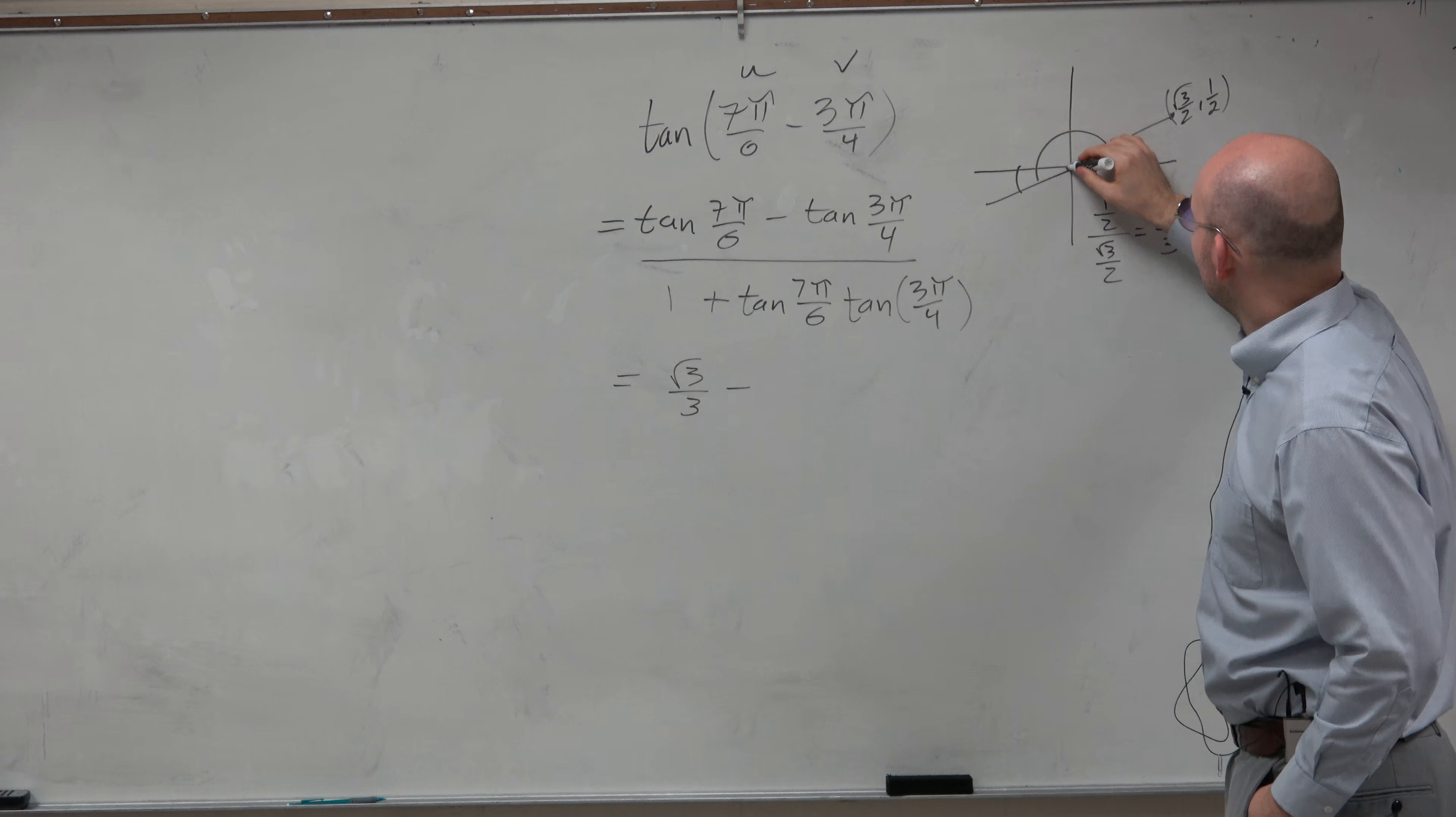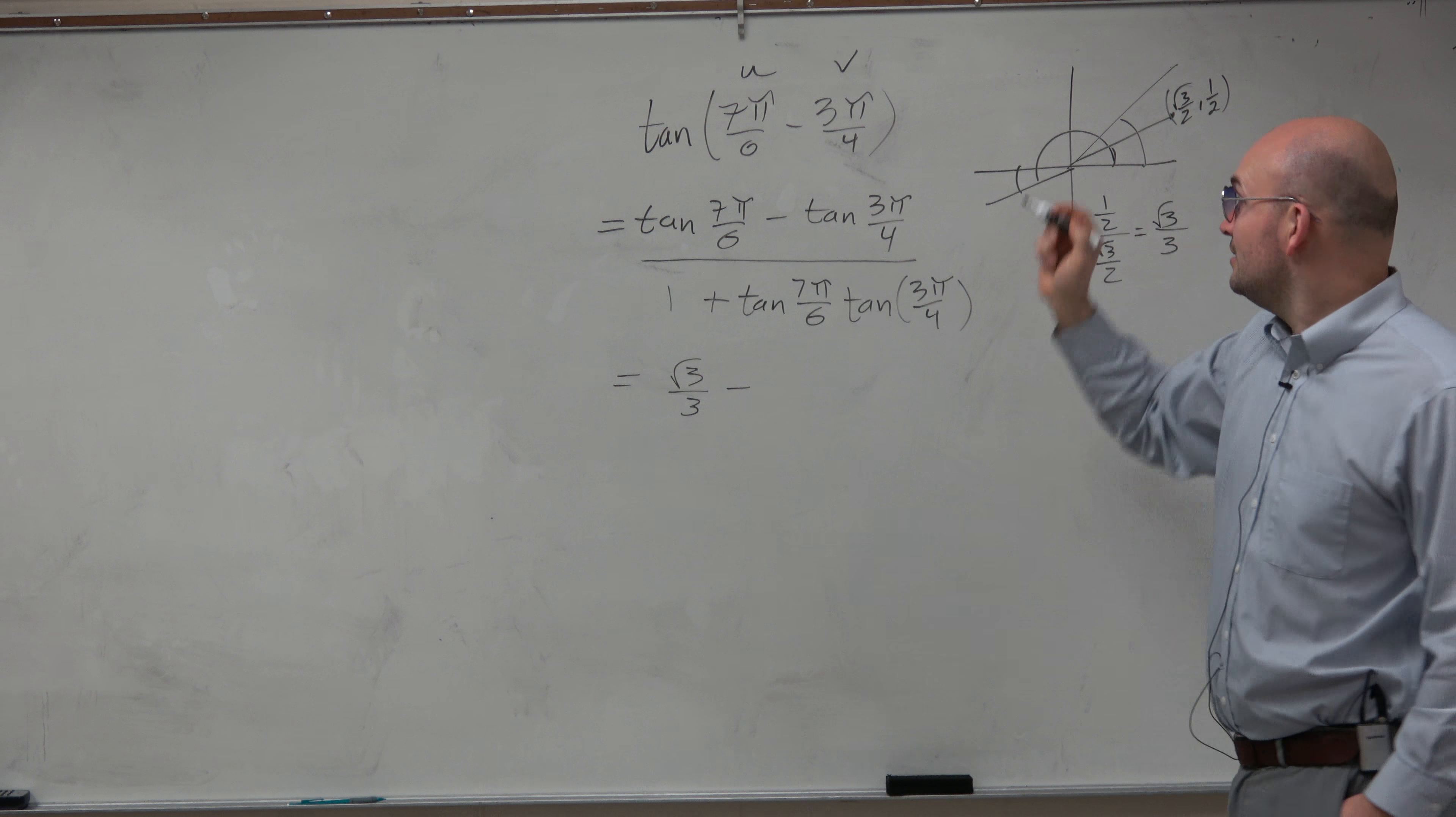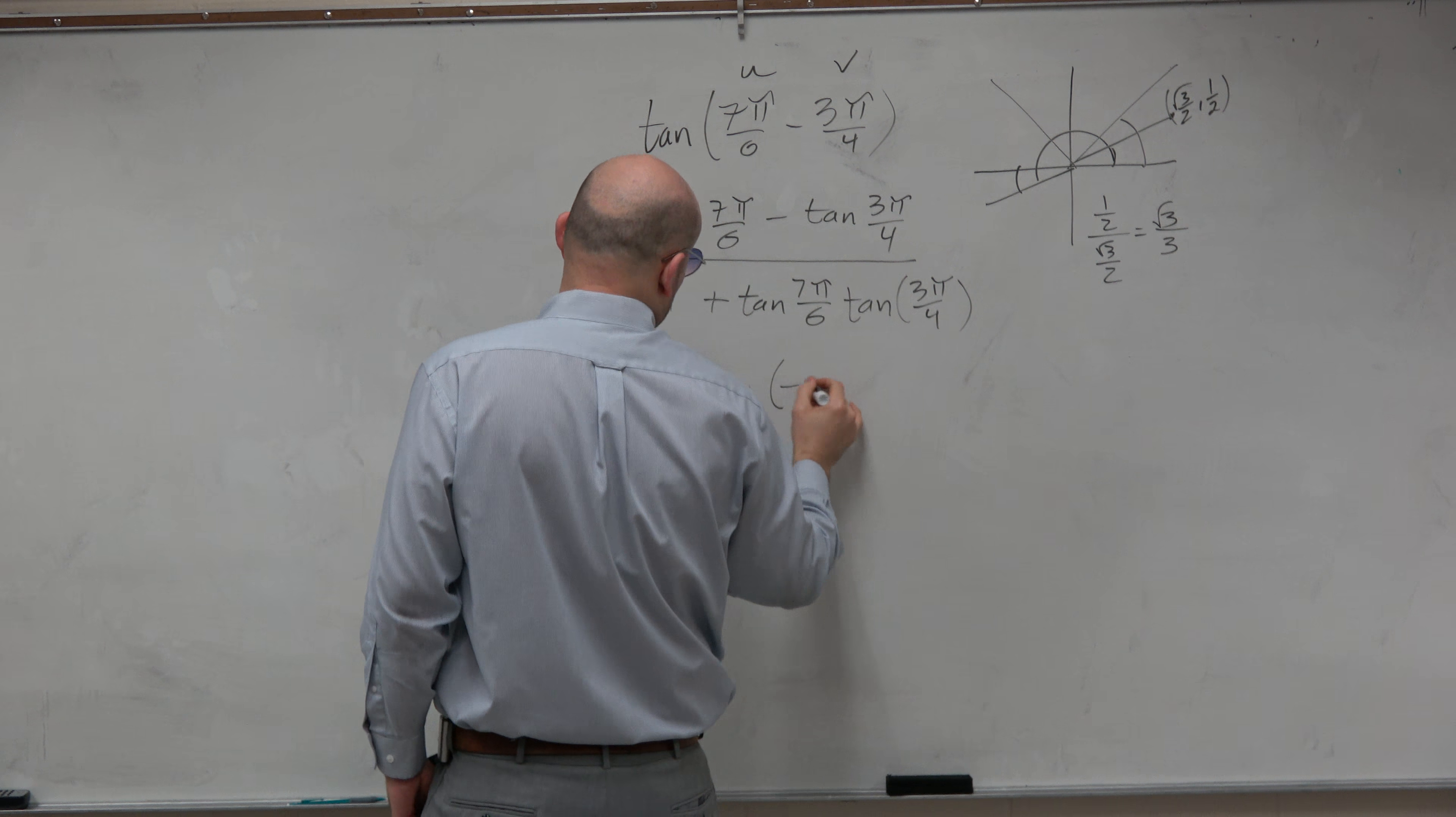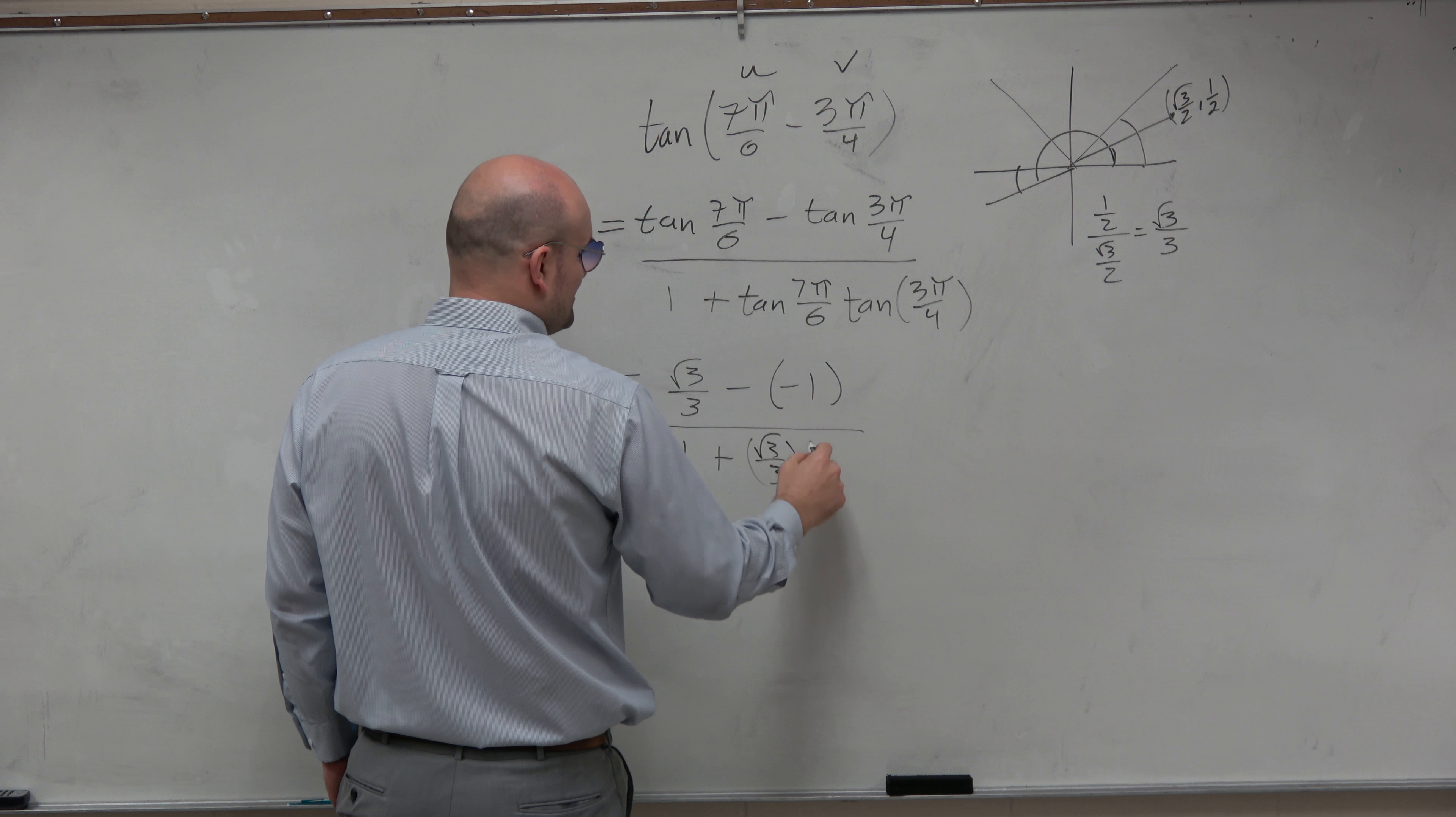Well, again, that has a reference angle of π over 4. And we know that coordinate point is square root of 2 over 2, comma square root of 2 over 2. So therefore, it's 1. However, 3π over 4 is in the second quadrant. So therefore, it is negative. All over 1 plus square root of 3 over 3 times negative 1.